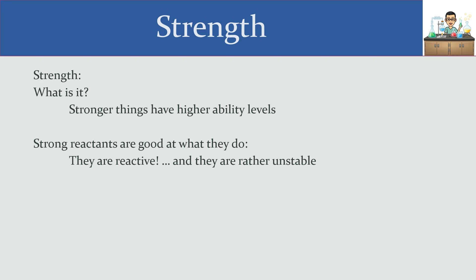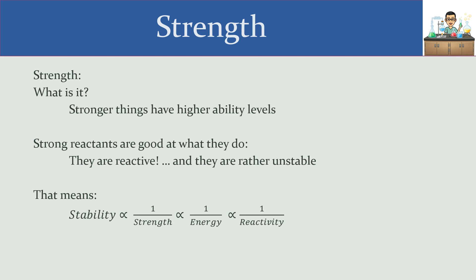Relating all four concepts together: stability and strength are inverses of each other. Stability stands alone, whereas strength, energy, and reactivity each go in the same direction. Stability is the only one going in the opposite direction from the other three. Strength, energy, and reactivity all go in the same direction — stability is the outlier.